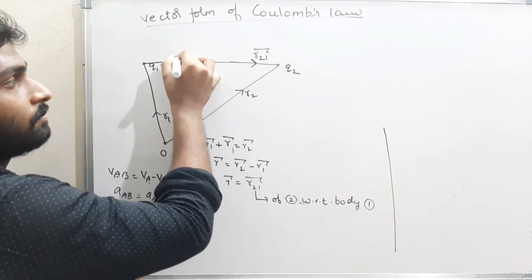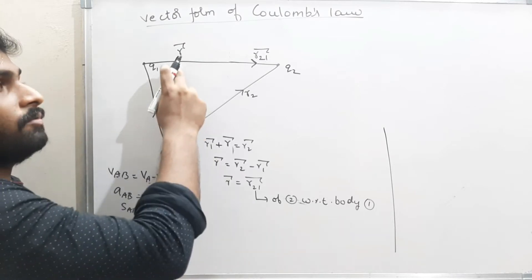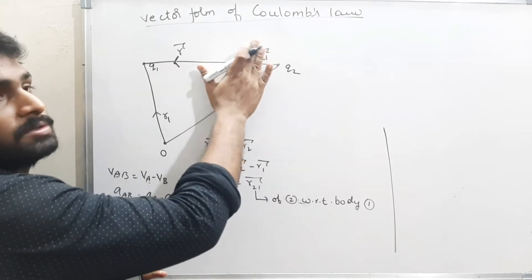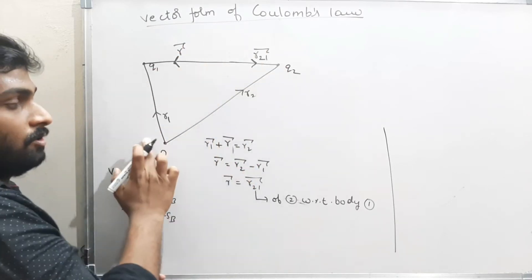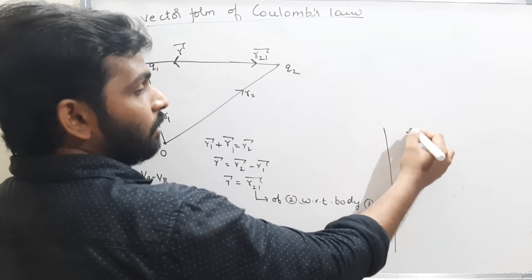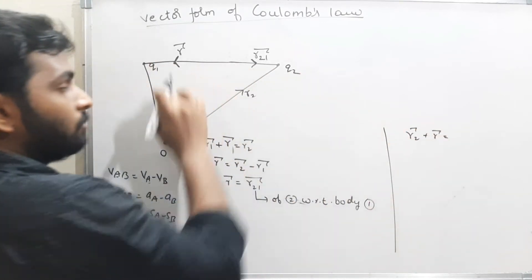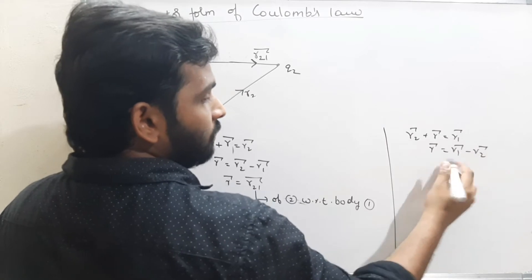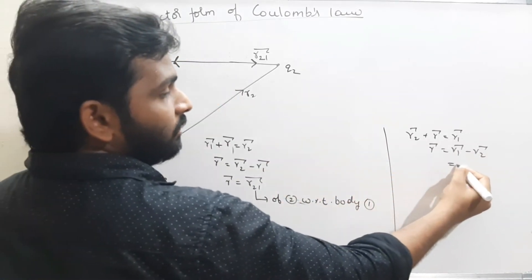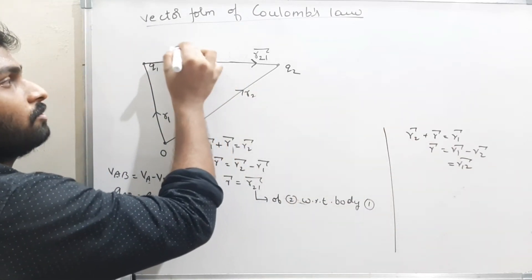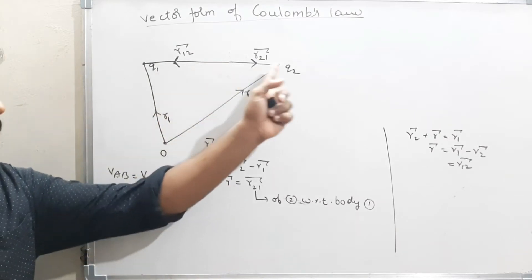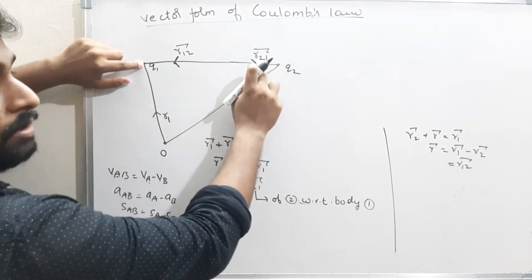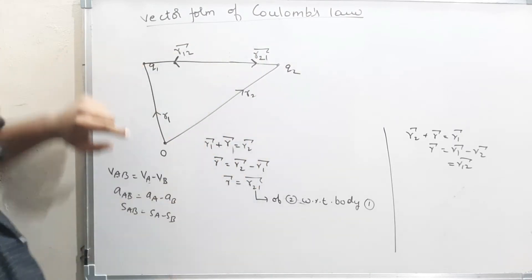Similarly, if I consider the vector in the opposite direction — from Q2 towards Q1 — then using vector addition: r̄₂ + r̄ = r̄₁, giving r̄ = r̄₁ − r̄₂, which is r̄₁₂. So r̄₁₂ = r̄₁ − r̄₂ — the position vector of body 1 with respect to body 2. And r̄₁₂ = −r̄₂₁.